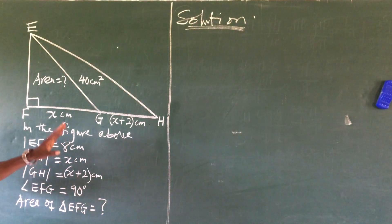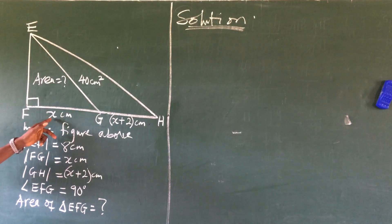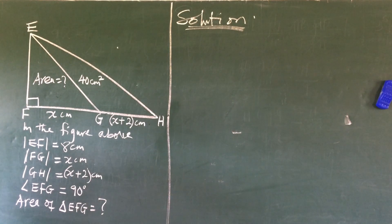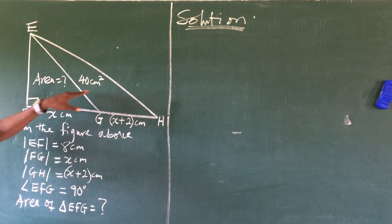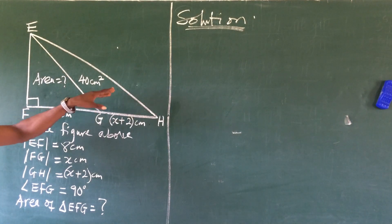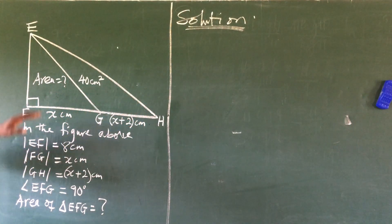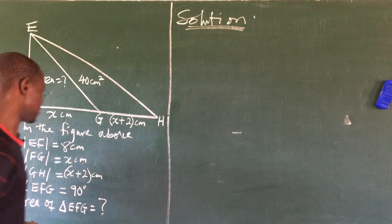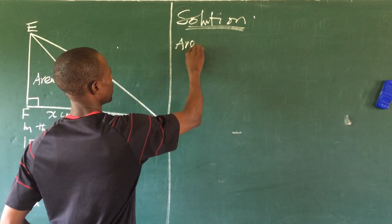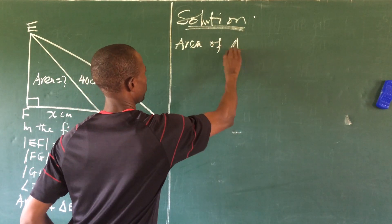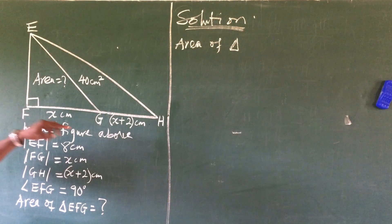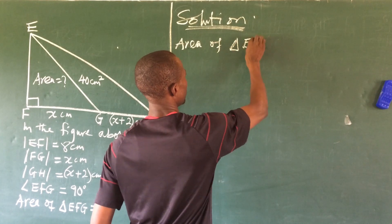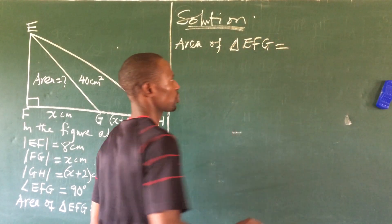The first thing we do is look at the whole diagram. We must get the value of x before we can solve for the area. The two figures we have here are just triangles. Let's find the area of each triangle and also the area of the whole triangle.